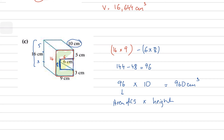Multiply the area of cross section (96) by the height of the prism, which is the perpendicular distance between the two identical faces — that's 10. So volume equals 96 times 10 equals 960 cm³. To find the volume of any prism, take the area of cross section and multiply by the height — the perpendicular distance between the two identical faces.